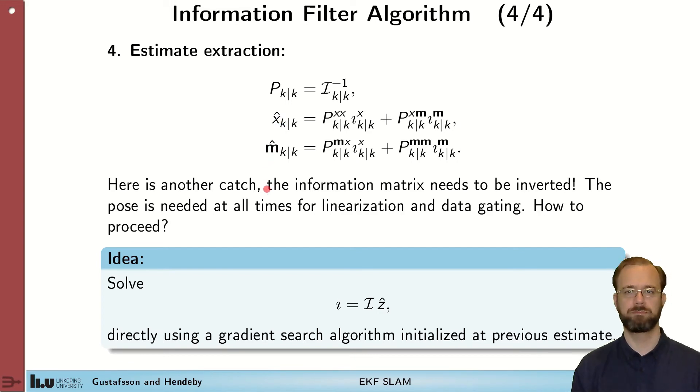And that's the catch with the information matrix form. It needs to be inverted. However there's ways to at least improve the situation. We can see the finding of x and m here as solving this equation system. And that can be done with efficient gradient search methods. And if we warm start them with the previous state then we could quite quickly arrive at the solution without having to perform a proper inverse of information matrix. And that is one trick to actually speed up this method to be useful in practice.